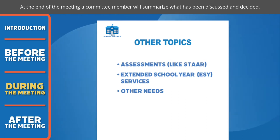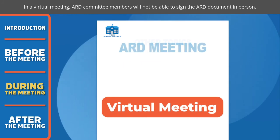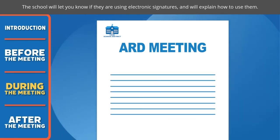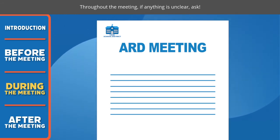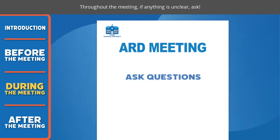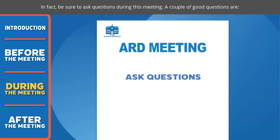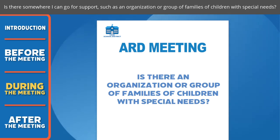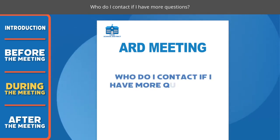At the end of the meeting, a committee member will summarize what has been discussed and decided. In a virtual meeting, ARD committee members will not be able to sign the ARD document in person. The school will let you know if they are using electronic signatures and will explain how to use them. Throughout the meeting, if anything is unclear, ask. Be sure to ask questions during this meeting. A couple of good questions are: Is there somewhere I can go for support, such as an organization or group of families of children with special needs? And who do I contact if I have more questions?